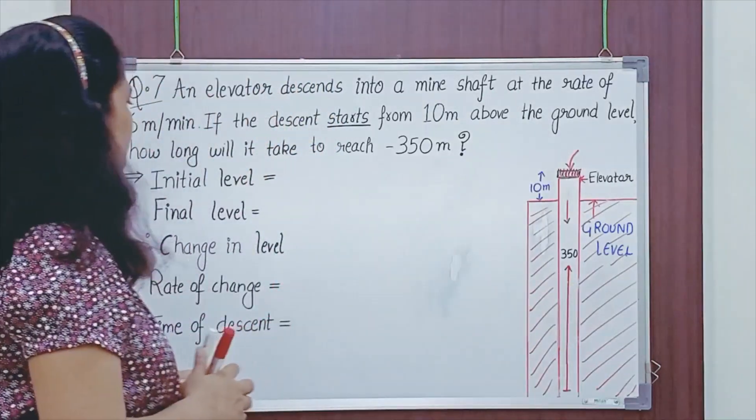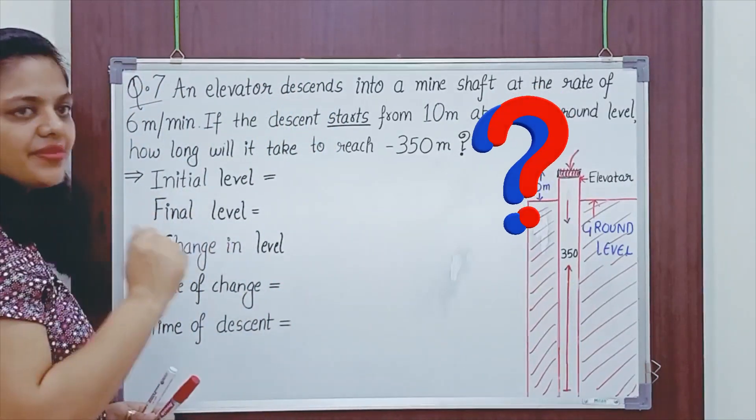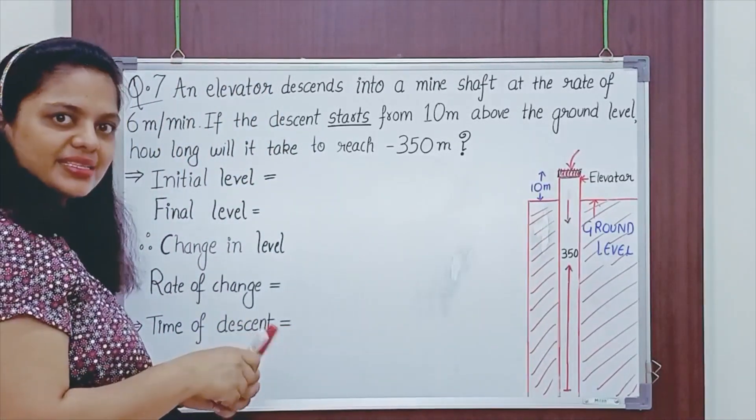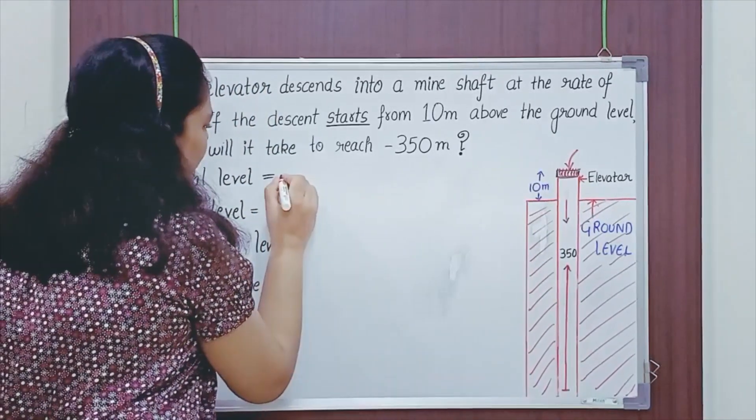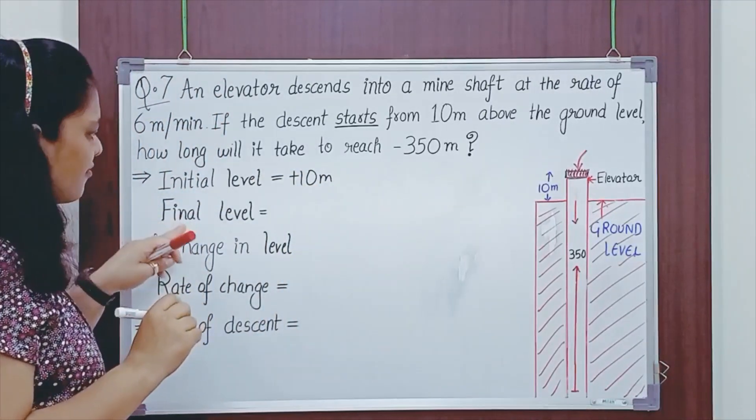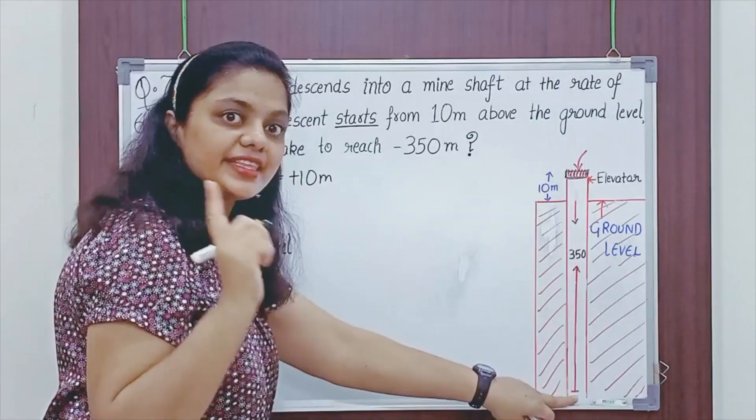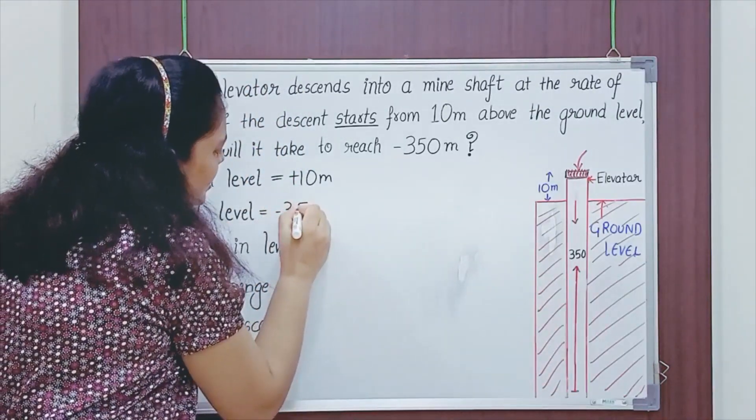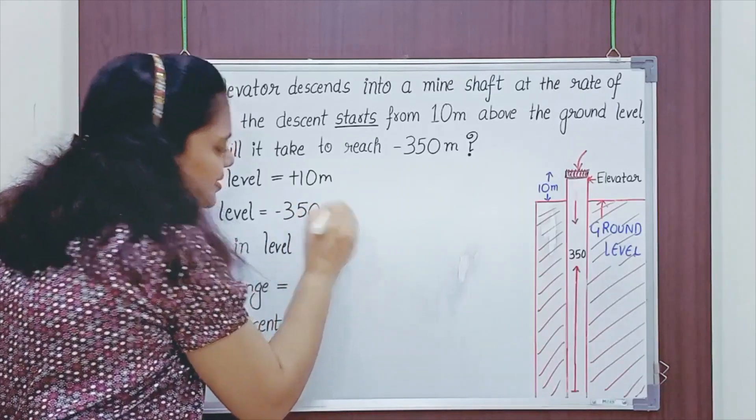Let's start with the question now. What is the initial level? It is 10 meters above the ground. So, I will represent it by plus 10 meters. Be careful to write the units also. Final level is 350 meters below the ground. So, I will represent it by negative integer, which is minus 350 meters.